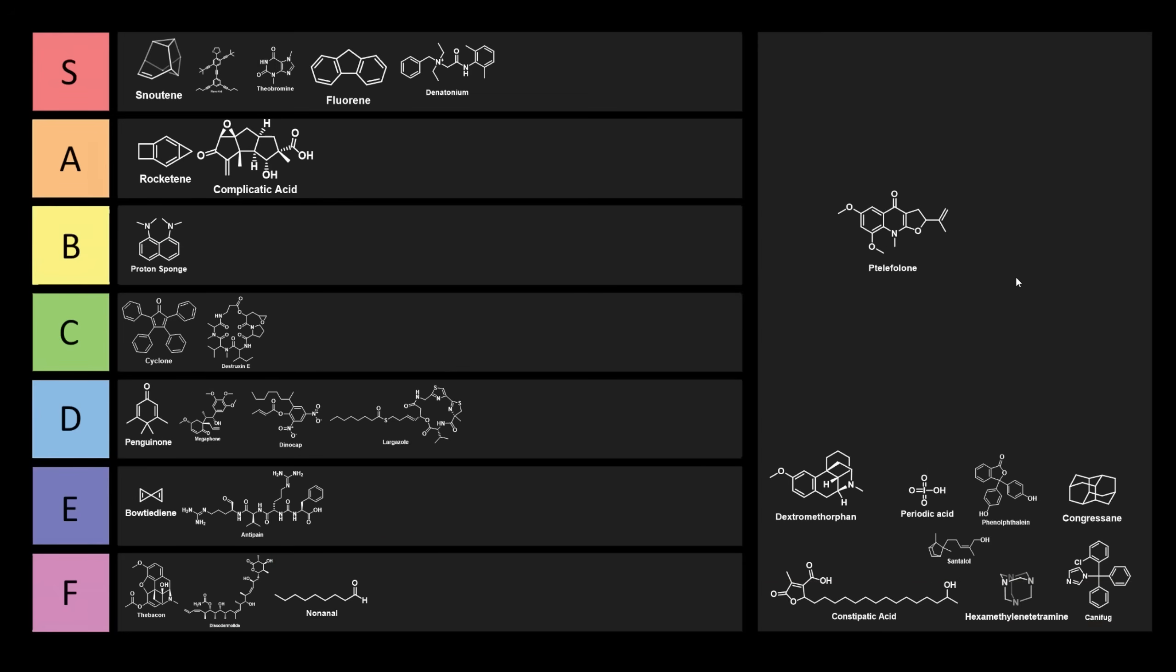Pteleophorone. Pteleophorone is annoying to say, and it's also annoying that it's named this way. It's isolated from the hop tree, which is also known as Ptelea trifoliata. It's got a rather interesting motif with this alpha-beta unsaturated ketone connected to the benzene through a nitrogen, which I think is quite interesting, but the name is definitely upsetting. I think this one's probably going to go into A tier because it's annoying to say. It's annoying that it's called that. But it does have an -one, so maybe we'll put it into B tier because it does have a ketone, so part of the name is true.